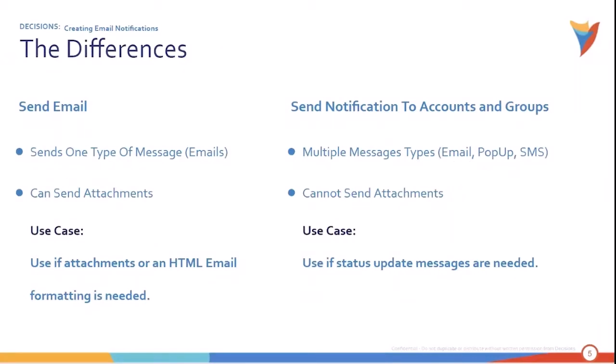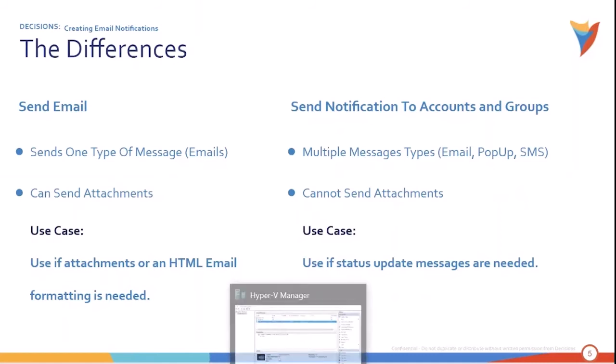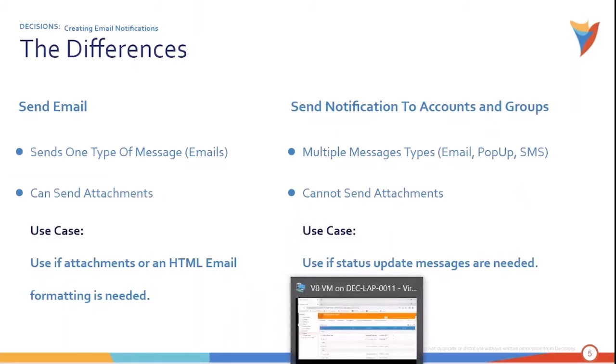The key differentiators are: the Send Email step only sends one type of message — emails — whereas Send Notifications to Accounts and Groups can send multiple message types. The Send Email step can send attachments while notifications cannot. For example, if we need to send a PDF document generated in a flow, we use the Send Email step. If we just want to send a message, we use Send Notification to Accounts and Groups.